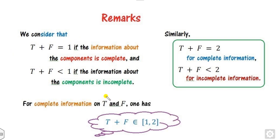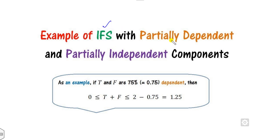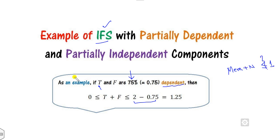For complete information in IFS, the value is either 1 (dependent case) or 2 (independent case), so the interval is [1, 2]. As an example with partial dependence, if T and F are 75% dependent, the upper bound of T plus F is 1.25. So remember: the sum of membership plus non-membership does not always need to be less than or equal to 1 — it depends on the degree of dependency.